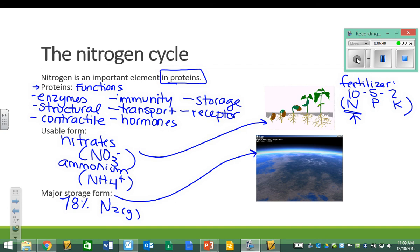So something has to happen to get this usable form from this nitrogen gas that our atmosphere is just chock full of. And so that's what the nitrogen cycle is basically going to be about. How are we changing nitrogen from its storage form to its usable form?